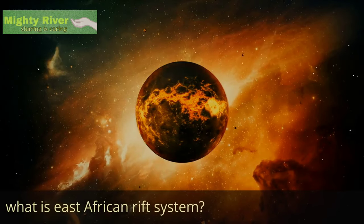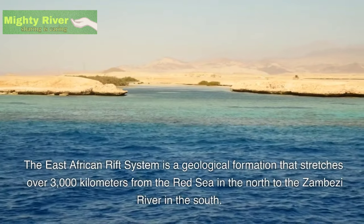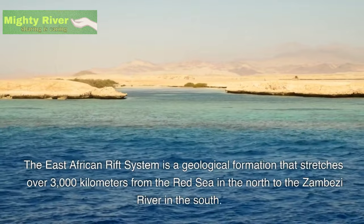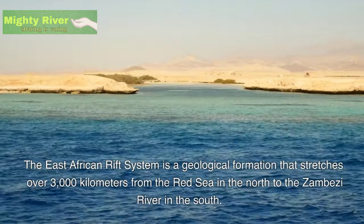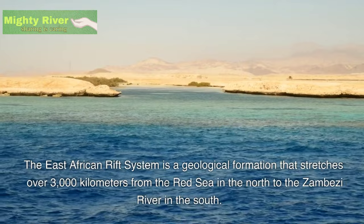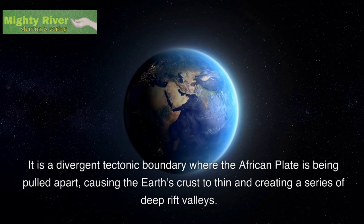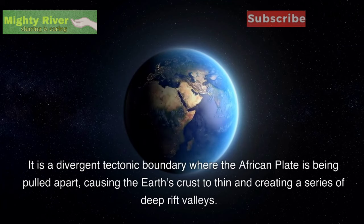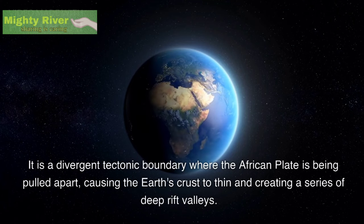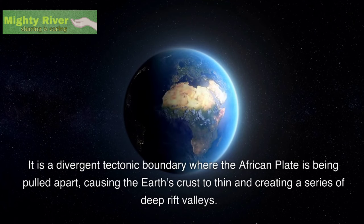What is the East African Rift System? The East African Rift System is a geological formation that stretches over 3,000 kilometers from the Red Sea in the north to the Zambezi River in the south. It is a divergent tectonic boundary where the African plate is being pulled apart, causing the Earth's crust to thin and creating a series of deep rift valleys.